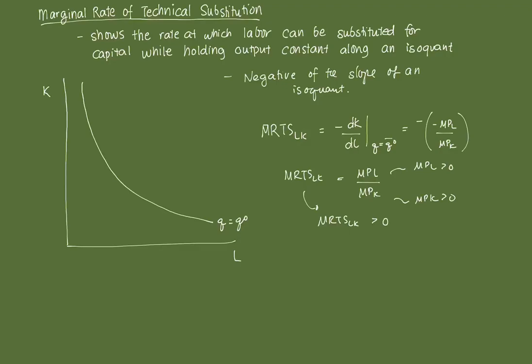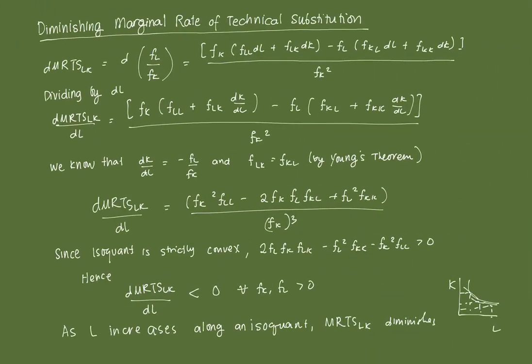Now, in addition, when the isoquant is strictly convex — just like an indifference curve, an isoquant is also strictly convex — then along an isoquant, the marginal rate of technical substitution is diminishing for increasing inputs of labor. There's a derivation for that which involves the total differential, so let's get to it. To show that strictly convex isoquants imply a diminishing MRTS_LK as L increases along the isoquant, we need to show that the derivative of MRTS_LK with respect to labor is less than zero.